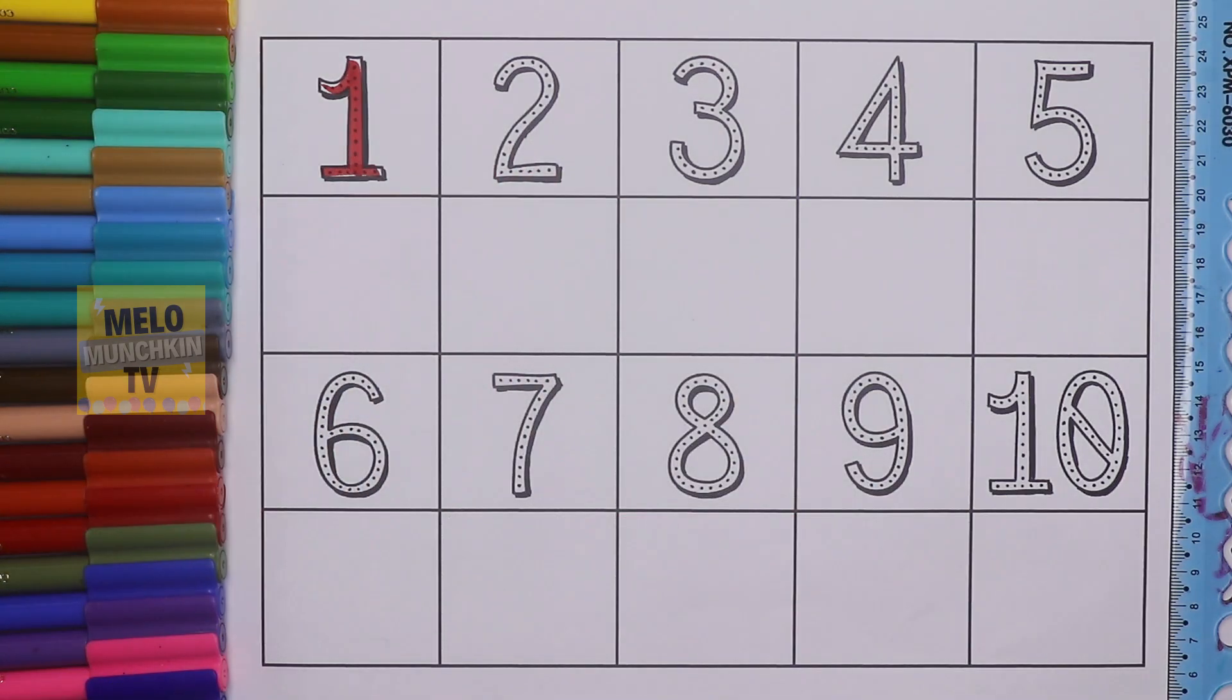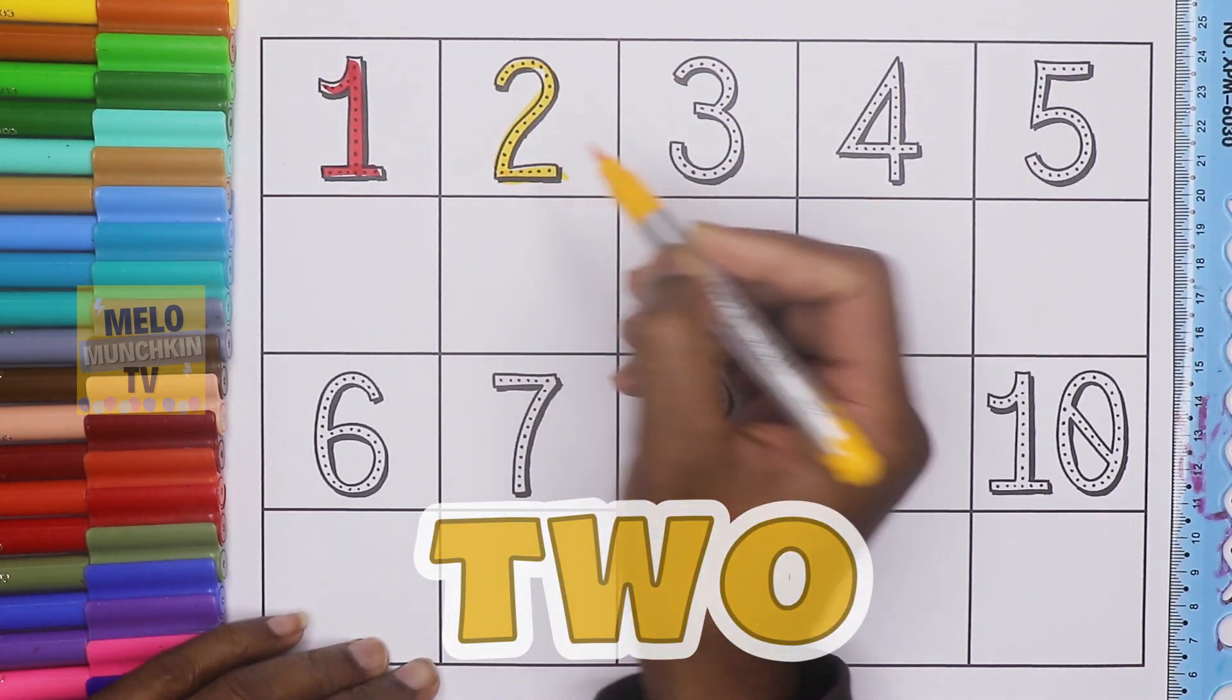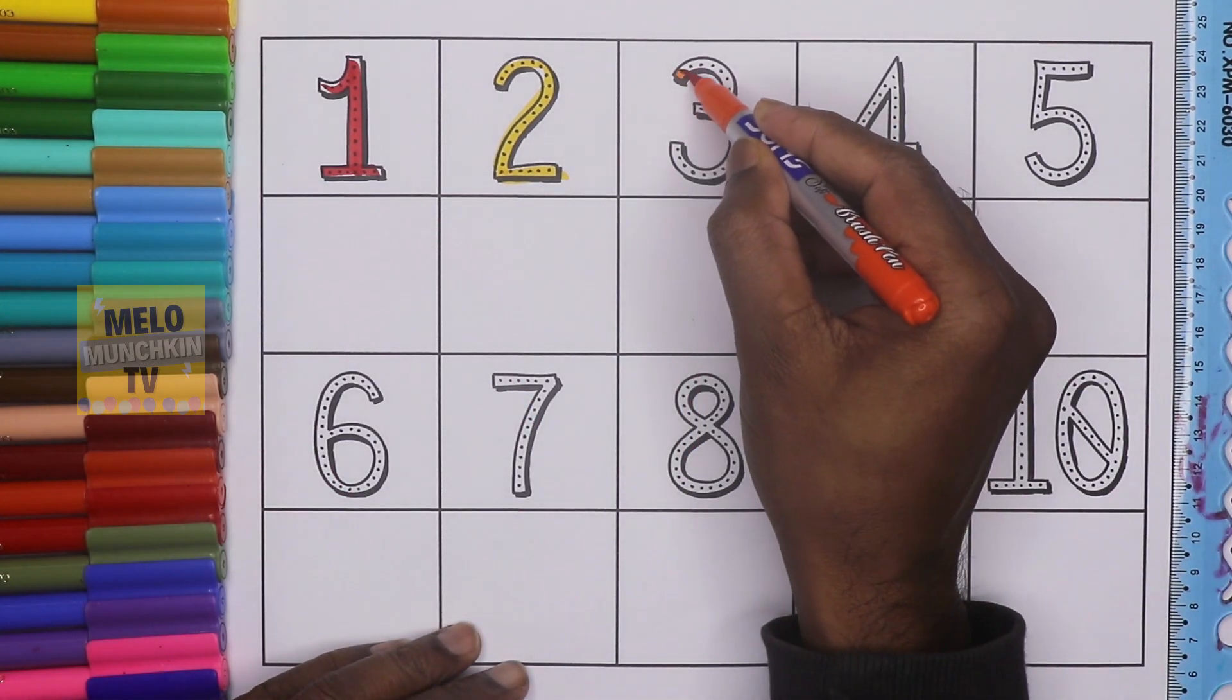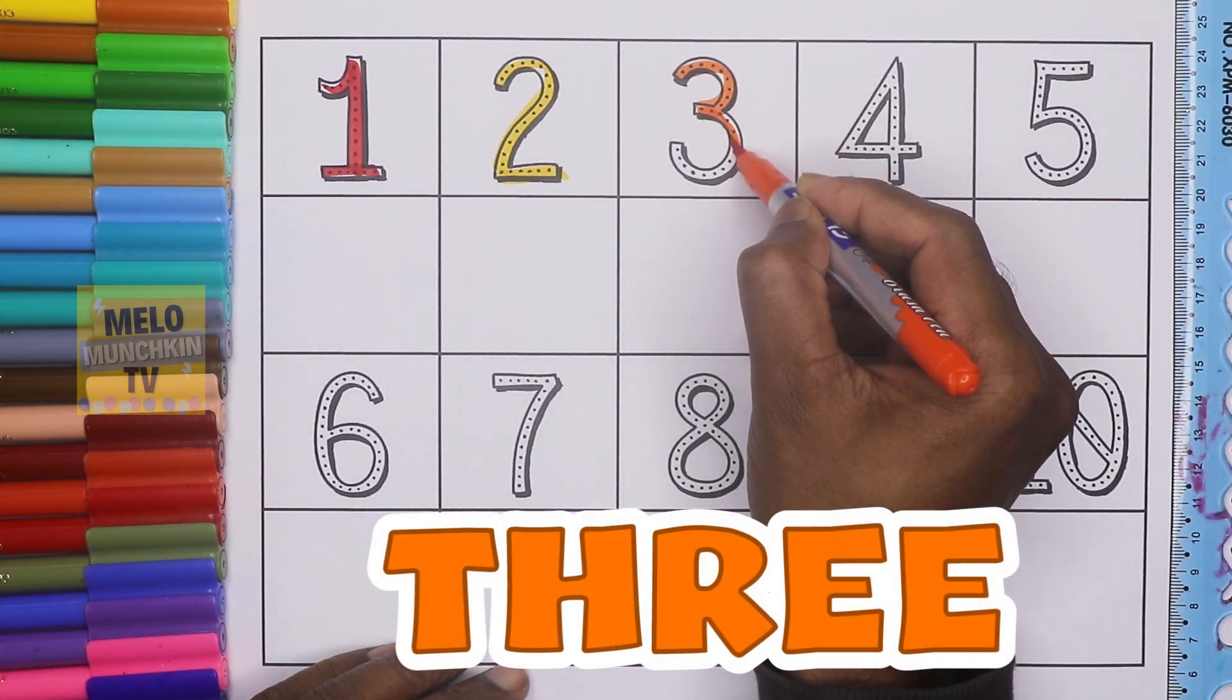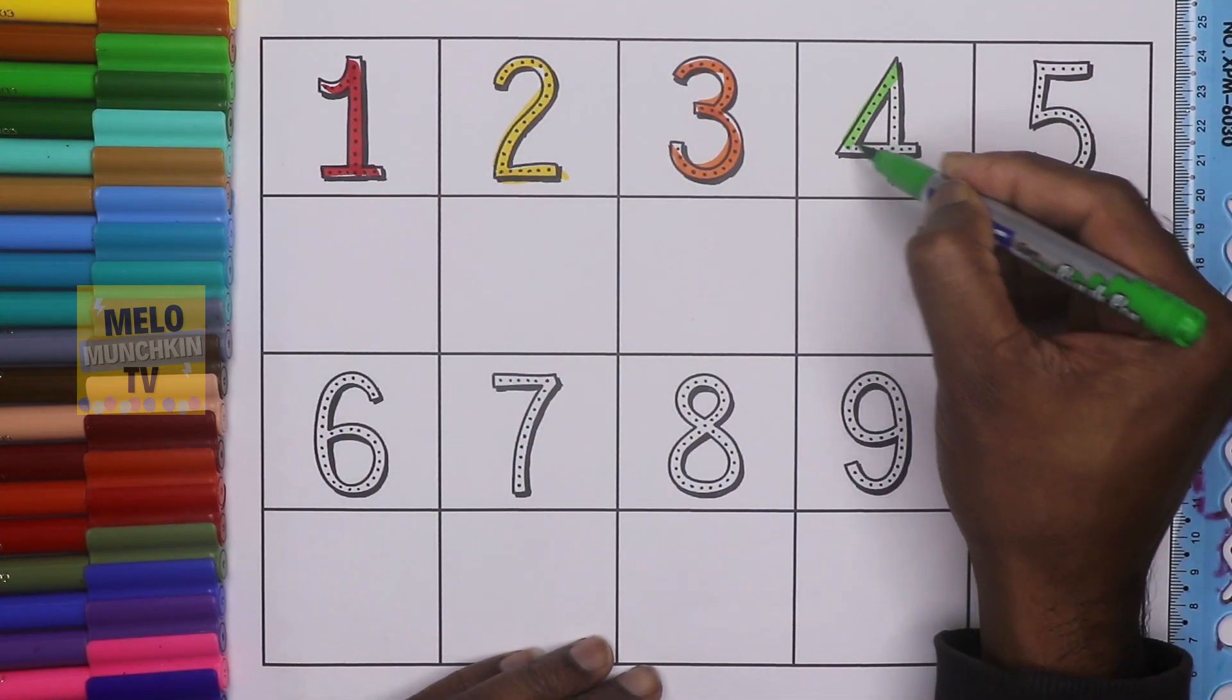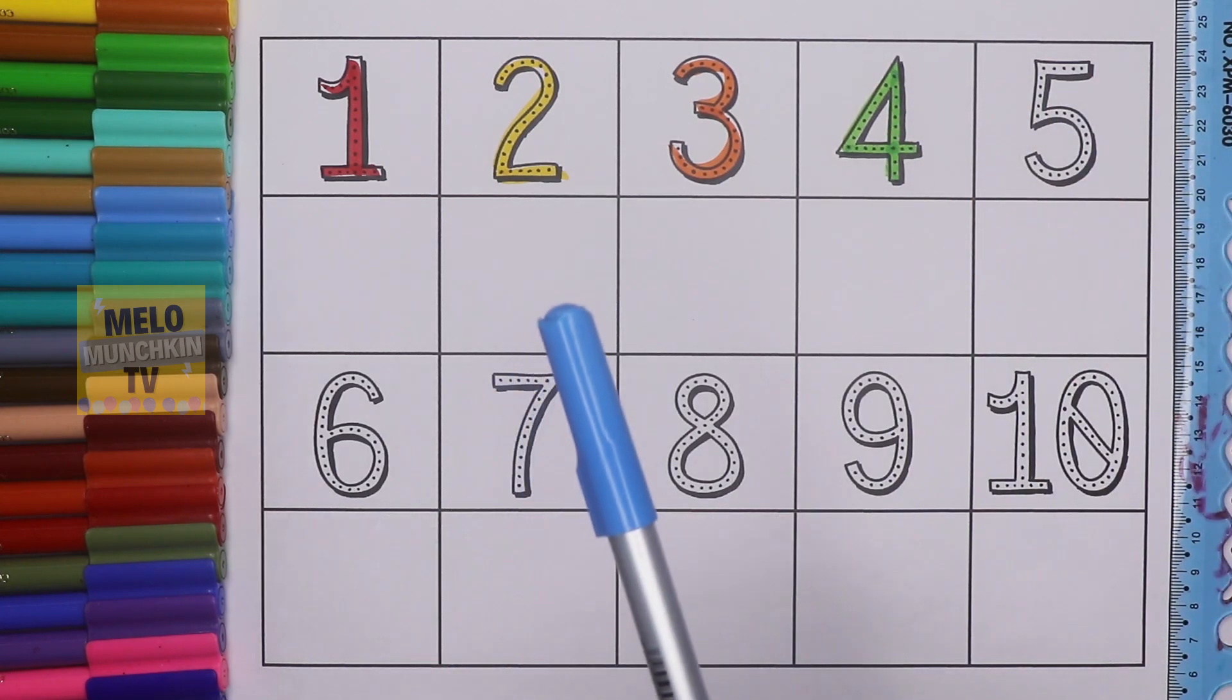Next I'll take yellow color to write number two: T-W-O, two. Orange color for number three: T-H-R-E-E, three. Light green color, this is number four: F-O-U-R, four.